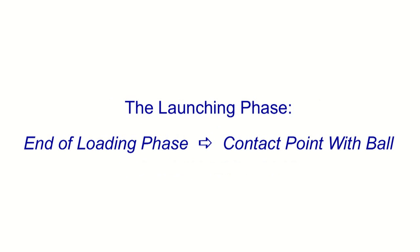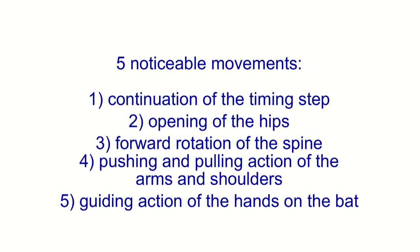Once again, the launching phase takes us from the end of the loading phase to the contact point with the ball, and it consists of five noticeable movements. In this video, we are going to talk about the third movement, which is the forward rotation of the spine, and identify the muscles involved with this motion.